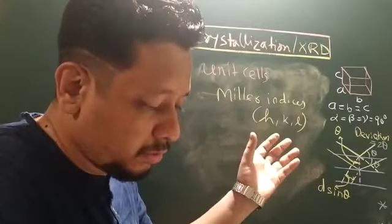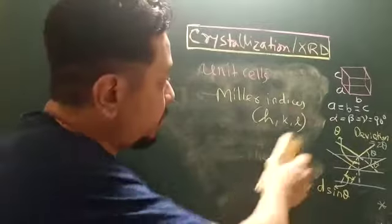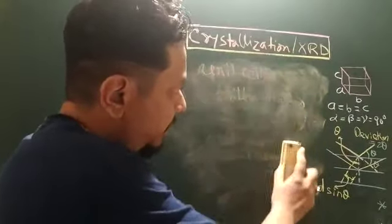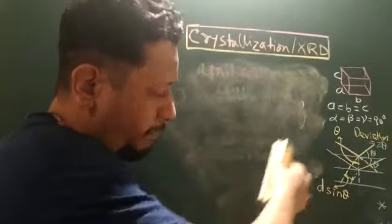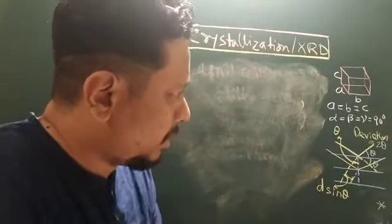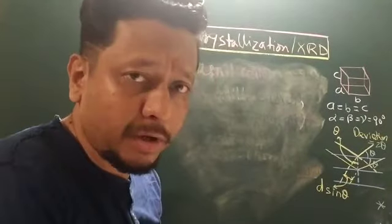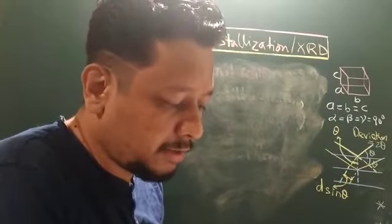When it is 90 degrees, known as cubic crystal, like sodium chloride and zinc sulfate.